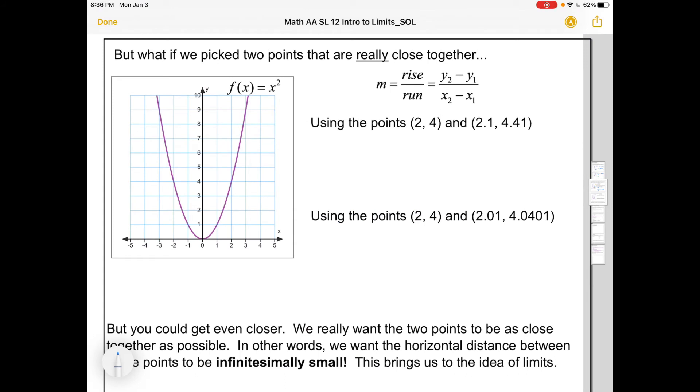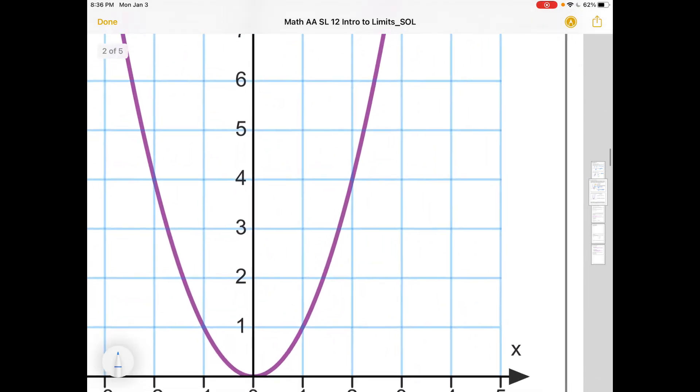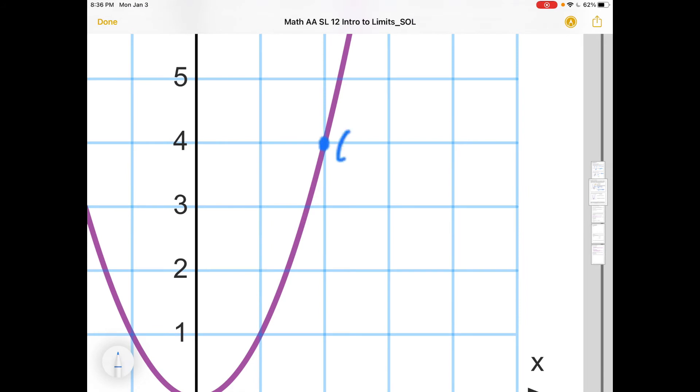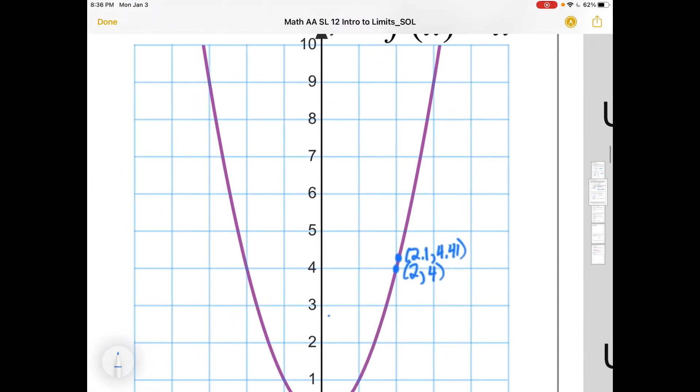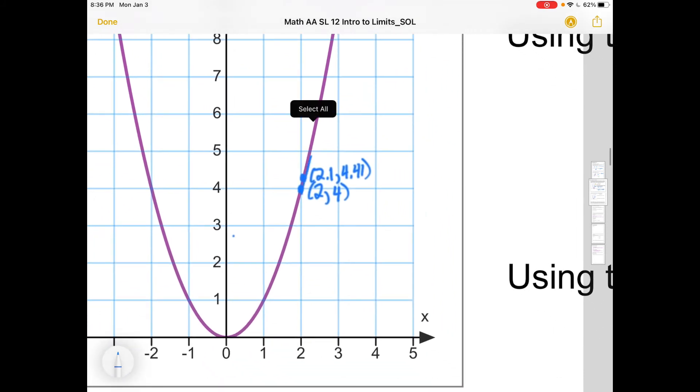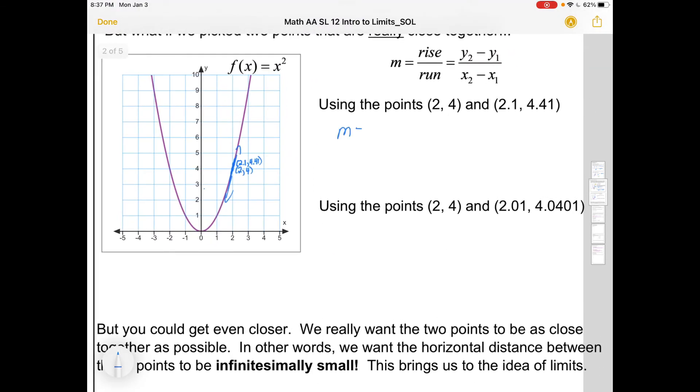So at this point, you might say, all right, we can't use the same point twice, but maybe we can use two points that are closer together. What if I really zoom in here and I use the point 2,4 and one right next to it here? This will be 2.1 and the y-coordinate would come from squaring 2.1, which would be 4.41. That's still going to be a secant, but it's going to be closer to the tangent. So I can draw it through those two points. And once I have those two points, I could find the slope. I could just go y2 minus y1 all over x2 minus x1. And it turns out that's going to give me 4.1. And you'd say, okay, that's pretty good. It looks really close to the tangent.